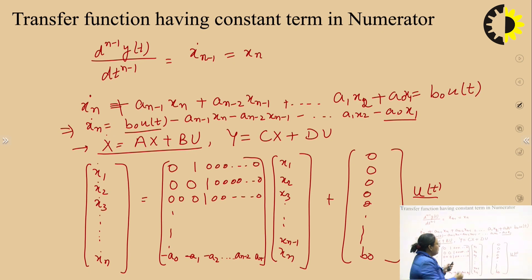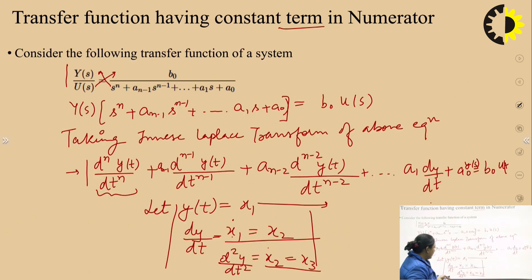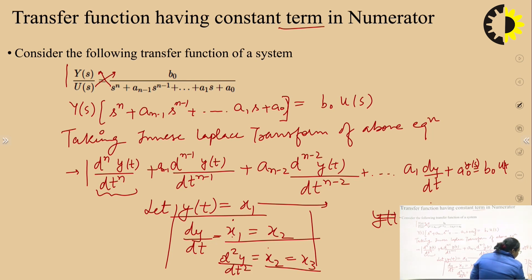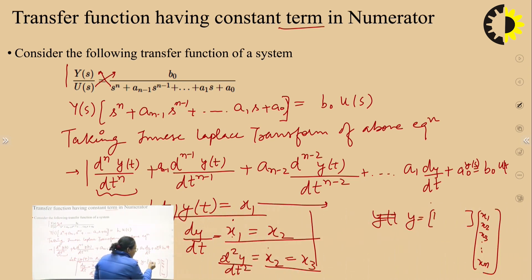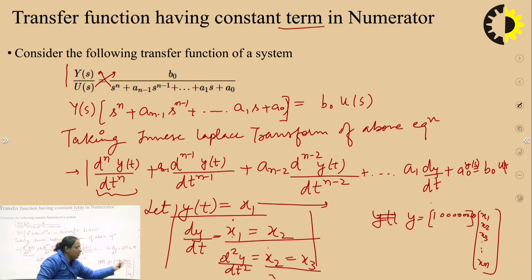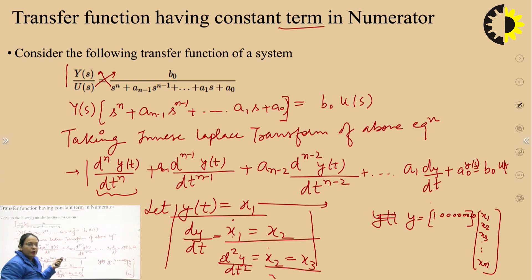Now, what about the output equation y = Cx + Du? Since y(t) = x1, the output equation is y = [1, 0, 0, ..., 0] times [x1, x2, ..., xn]^T. So matrix C = [1, 0, 0, ..., 0] and matrix D = 0. This completes the state space model for a transfer function having only a constant term in the numerator.